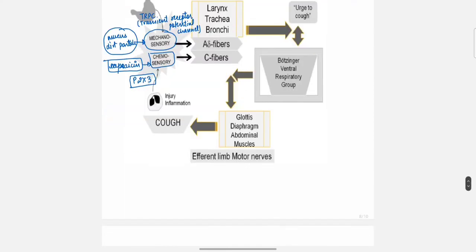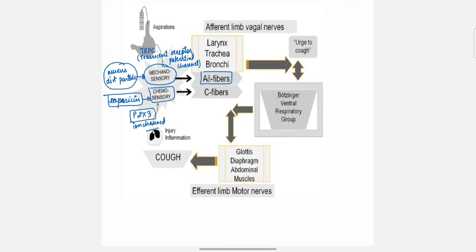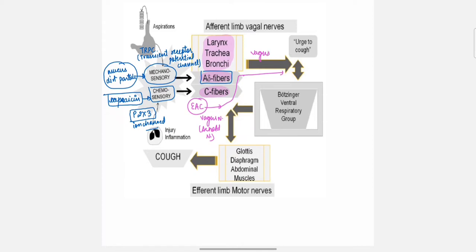P2X3 is an adenosine triphosphate-activated ion channel. Through mechanosensory pathways, A-delta fibers are activated, and through chemosensory pathways, C fibers are activated. These receptors are present in the larynx, trachea, bronchi, up to the alveoli. The afferent pathway is the vagus nerve.